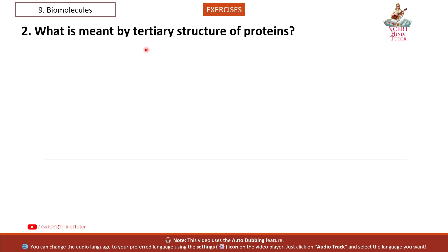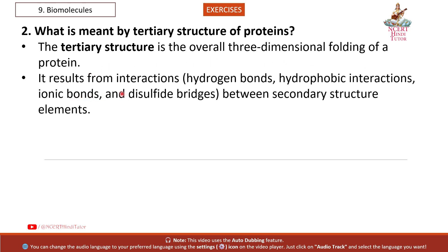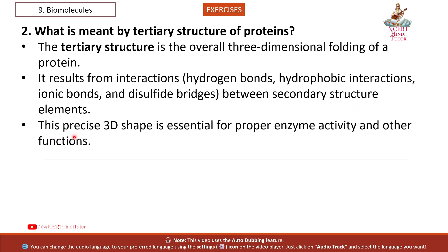Question 2: What is meant by tertiary structure of proteins? Answer. The tertiary structure is the overall three-dimensional folding of a protein. It results from interactions — hydrogen bonds, hydrophobic interactions, ionic bonds, and disulfide bridges between secondary structure elements.